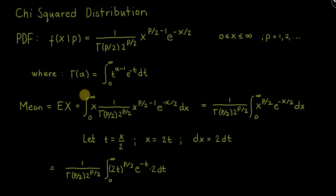Hello everyone. In this lecture, I'm going to show you how to derive the mean, the variance, and the moment generating function for the chi-squared distribution.